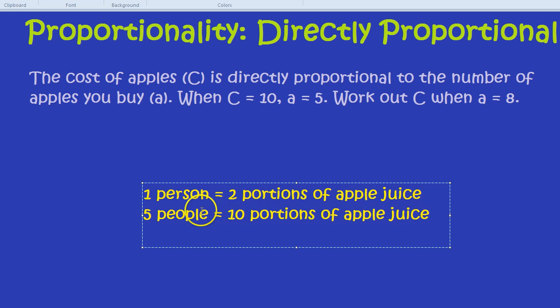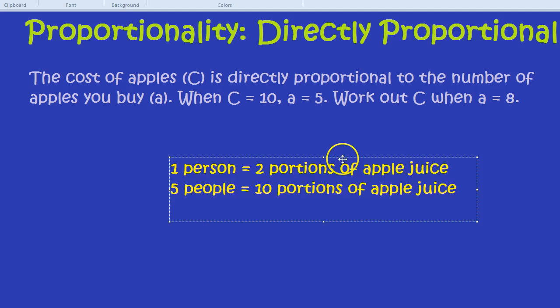Notice what we're doing is we're getting the amount of people times by some number, in this case two, to get the portions that we need. Well that is being directly proportional. As the first number goes up, the second number goes up multiplied by some constant, in this case two. That's one of the big problems with trying to answer questions like this - actually remembering what proportional actually means.